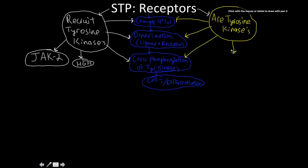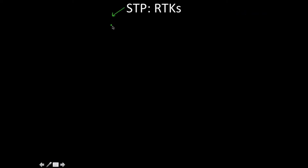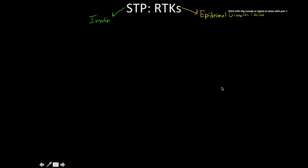For receptors that are tyrosine kinases — abbreviated as RTKs, or receptors with tyrosine kinase domains — the two examples are the insulin receptor and the epidermal growth factor receptor. Tyrosine kinases play roles in many processes, from growth to overall metabolic processes.